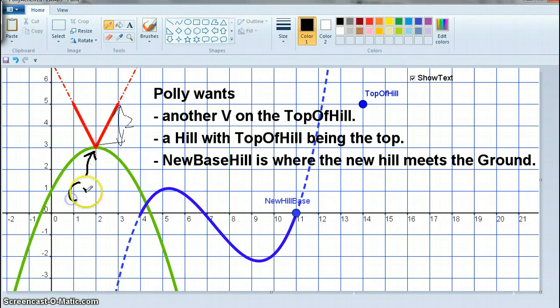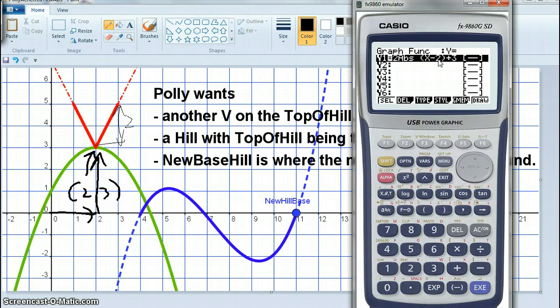And this point here is 2, 3. So the 2 moved it this way, and the 3 moved it that way. So I could see that the 2 went inside with the X, and the 3 moving it up went outside. How did I get absolute?